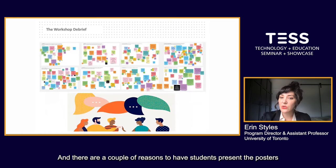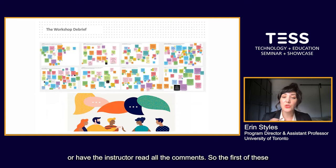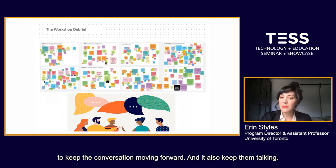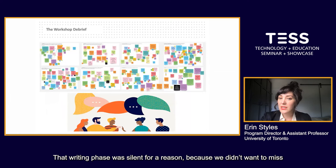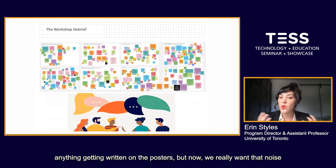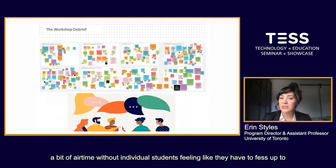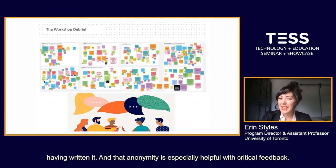There are a couple of reasons to have students present the posters in small groups rather than reading their own comments or having the instructor read all the comments. The first is that it really keeps the onus on the students rather than on the instructor to keep the conversation moving forward, and it keeps them talking. That writing phase was silent for a reason — we didn't want to miss anything getting written on the posters — but now we really want that noise, discussion, and debate. And finally, it gives every comment a bit of airtime without individual students feeling like they have to fess up to having written it. That anonymity is especially helpful with critical feedback.